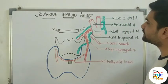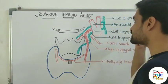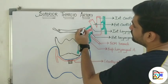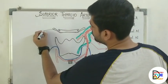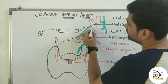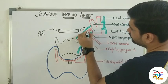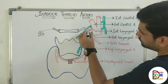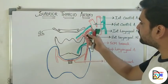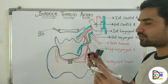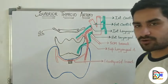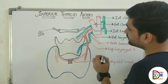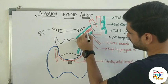Starting with the superior thyroid artery — the superior thyroid artery is a branch of the anterior division of the external carotid artery. This superior thyroid artery is given just below the level of the greater cornu of the hyoid bone. I am making dots over the superior thyroid artery so you guys can differentiate — the dotted red color is your main superior thyroid artery. So just below the level of the greater cornu of the hyoid bone, it will be given as a branch of the external carotid artery.